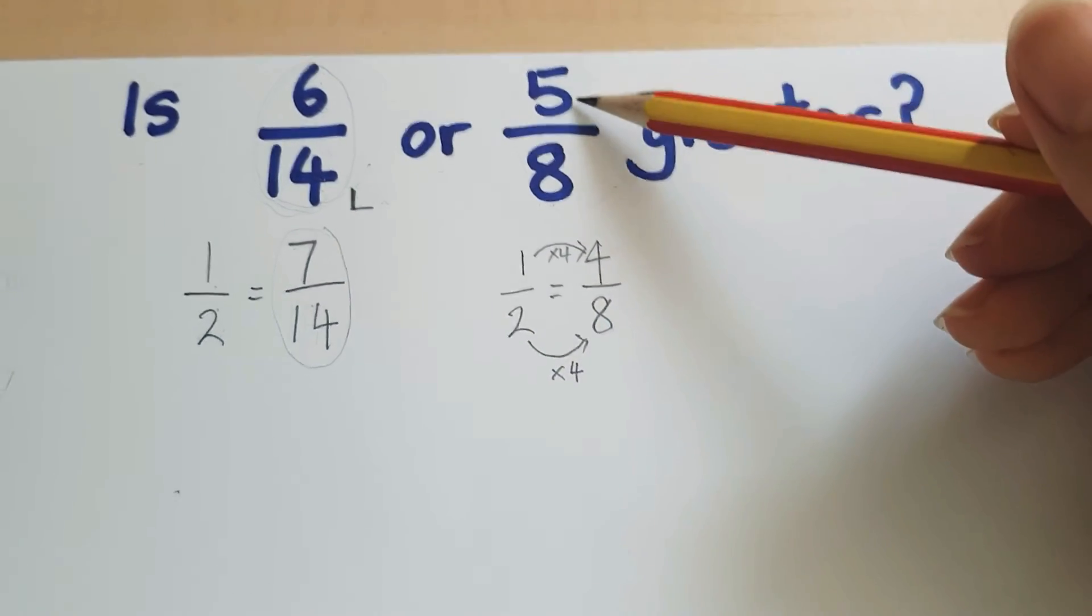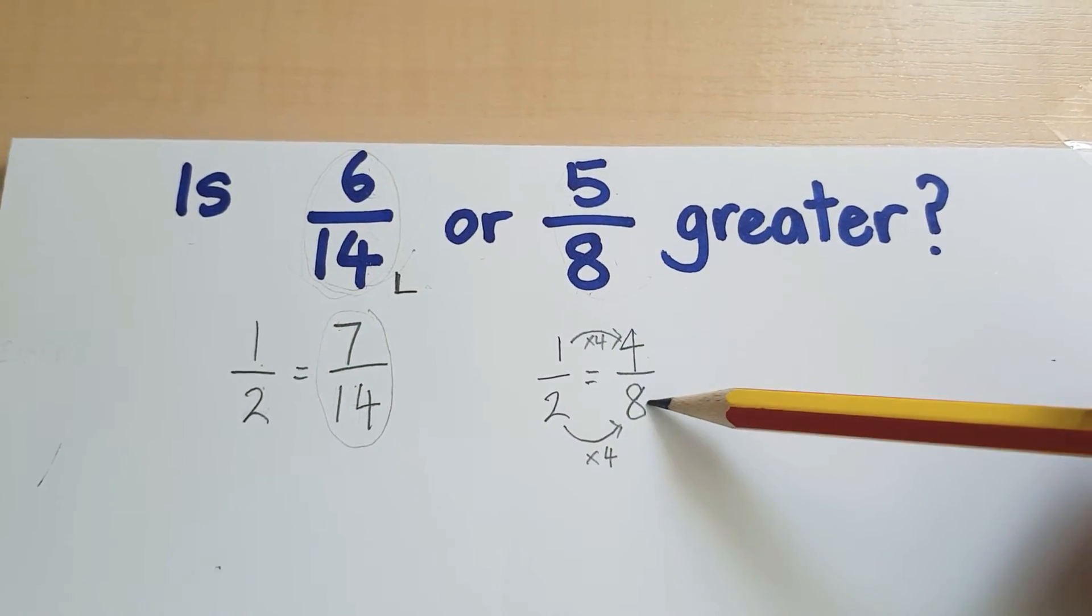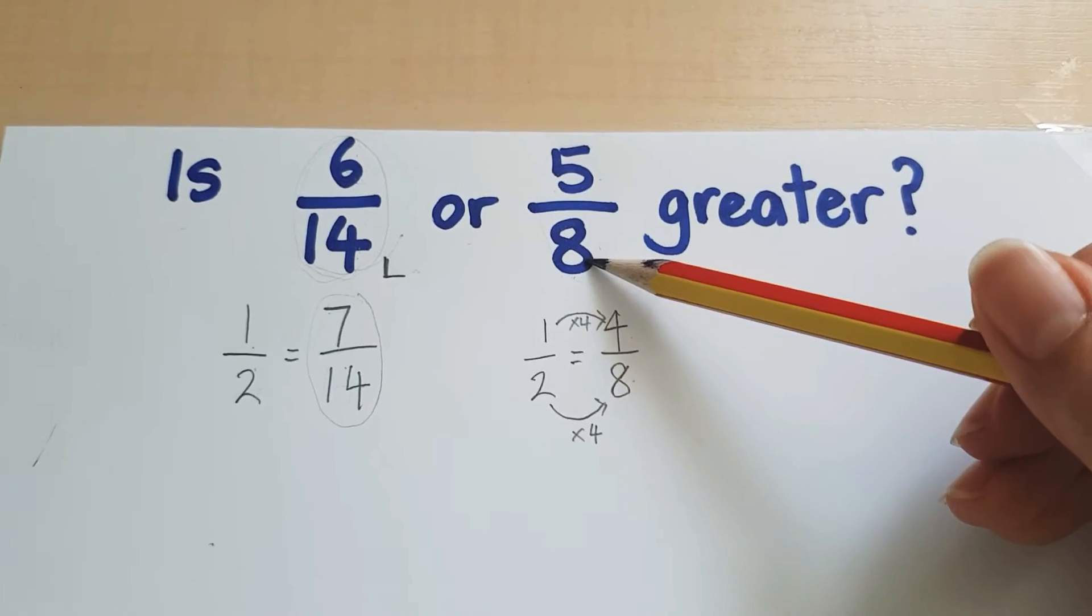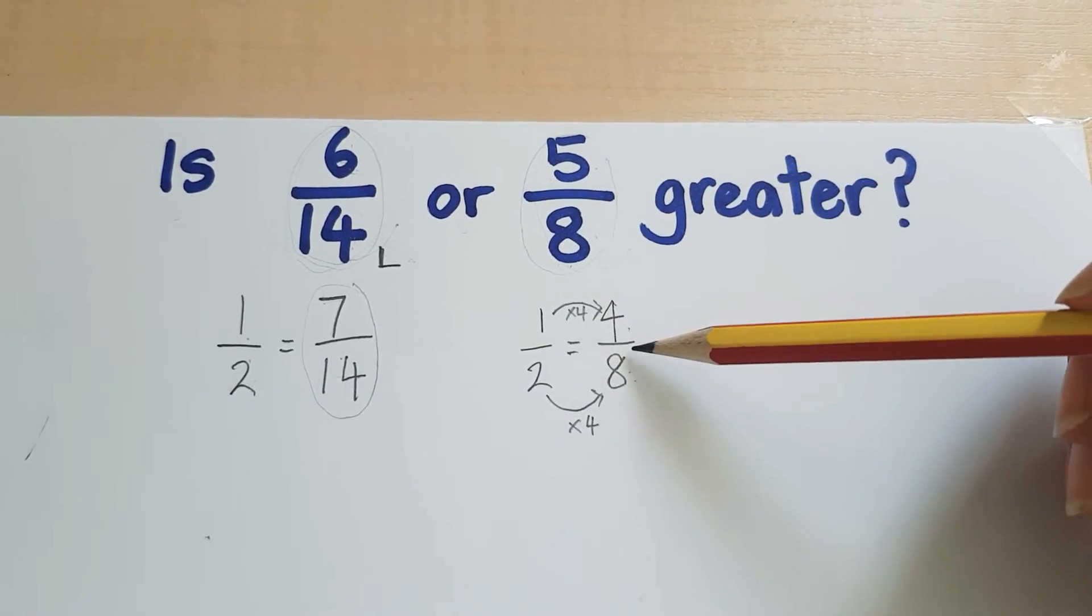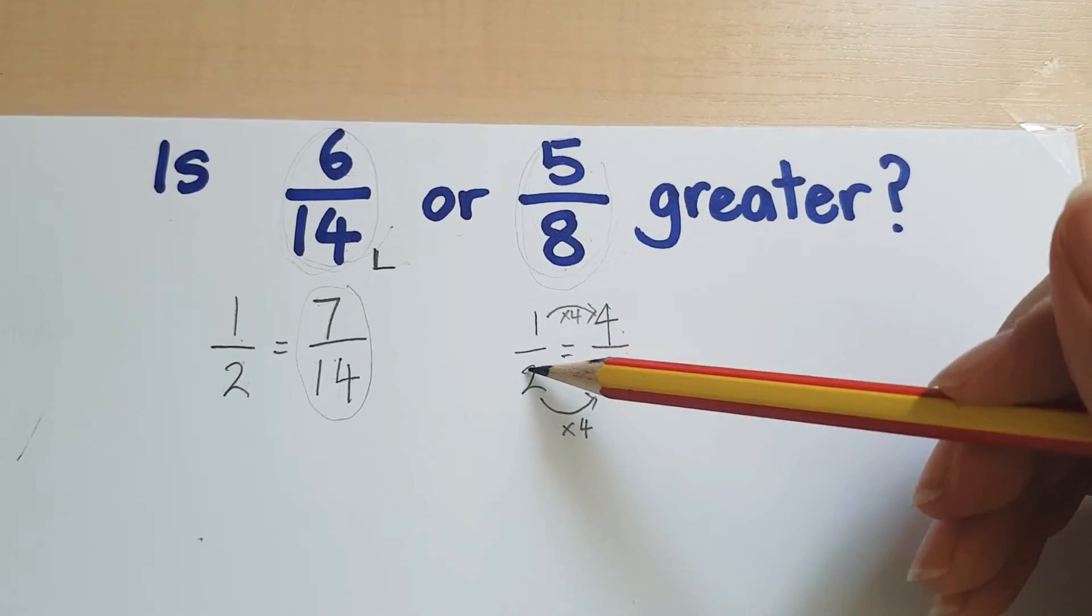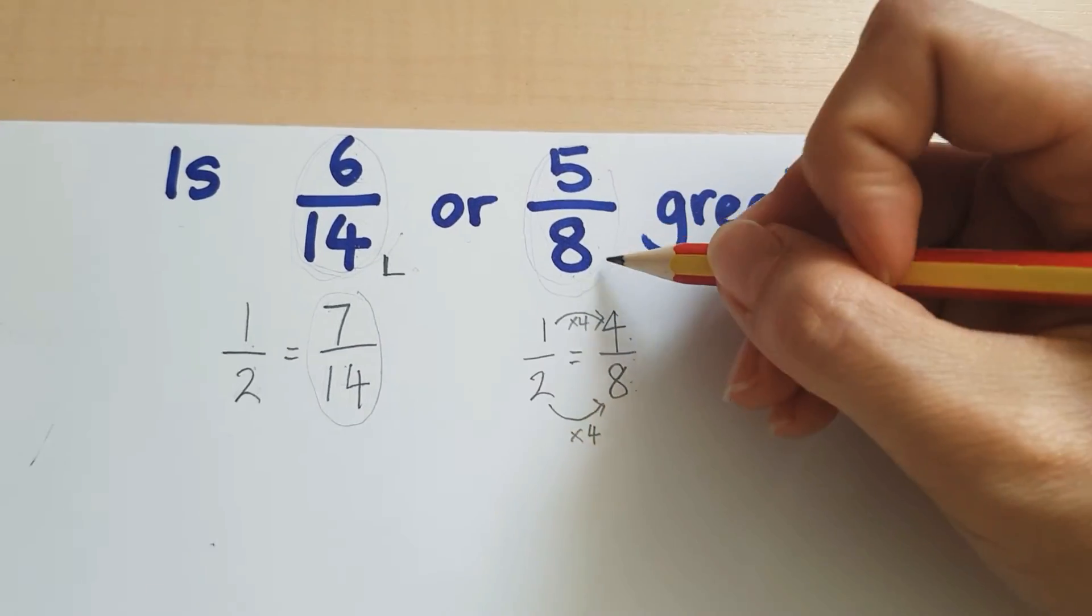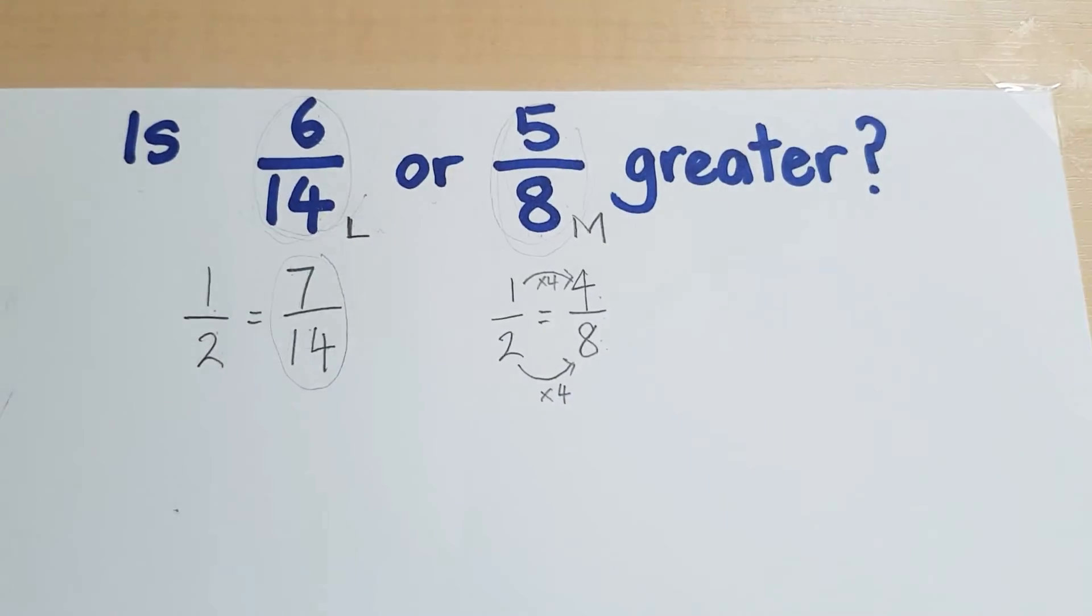So now I'm going to compare 5/8 with 4/8. 5 pieces of eighths versus 4 pieces of eighths, meaning that this is greater than 4/8 and therefore this is also greater than half. So this is more than half. I'm going to put an M.